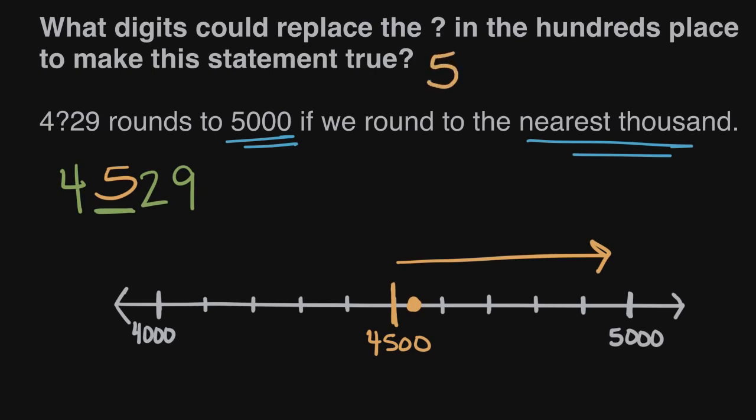What about 4? If we fill in a 4 here, we have 4,429. Well that's gonna be just to the left of 4,500. This line is 4,400, here's 4,500. So that point will come somewhere around here, which just barely rounds down to 4,000. It's close to the middle, but a little bit closer, a little bit nearer to 4,000. Its nearest 1,000 is 4,000. So 4 will not work.